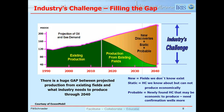That leaves the orange triangle — the gap between energy demand and our existing production. The challenge for energy industries is to fill that gap. The first method is to make new discoveries of oil, gas, coal, and non-hydrocarbon sources of energy. We have explored quite a number of basins around the world; that's not to say we won't find additional giant fields, but we can't depend strictly on new discoveries to keep pace with demand.